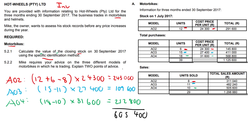For question 5.2.2, Mike requires advice on the three different models of motorbikes. Looking at A02, maybe we should reduce the price because the sales amount is a bit lower and we're holding too much stock - 10 units at the end of the period. So we could reduce the price of A02 to increase sales, or alternatively discontinue A02 altogether and look at stocking alternative products. We could stock more of A03, which seems to be doing well and is more affordable.